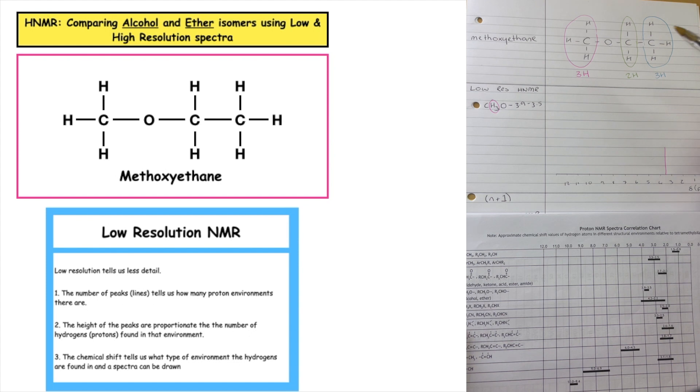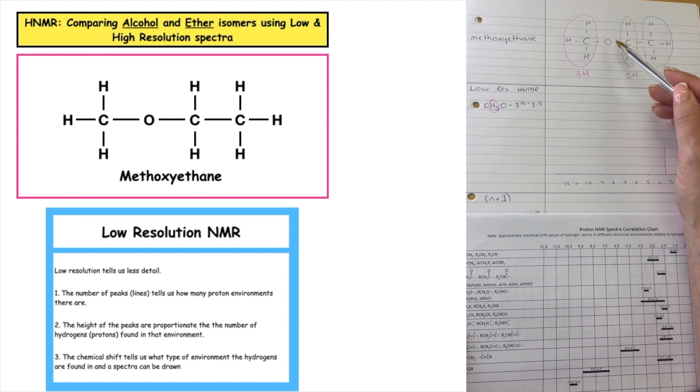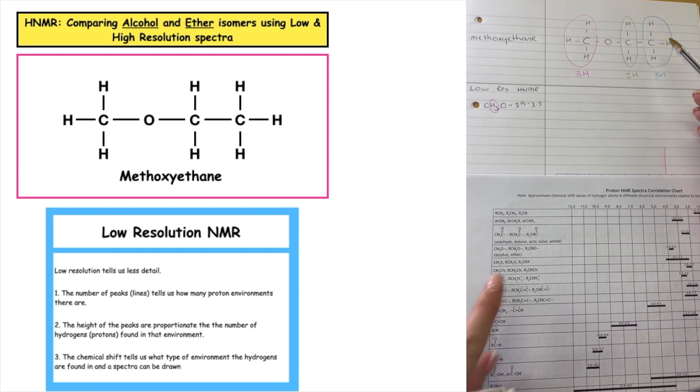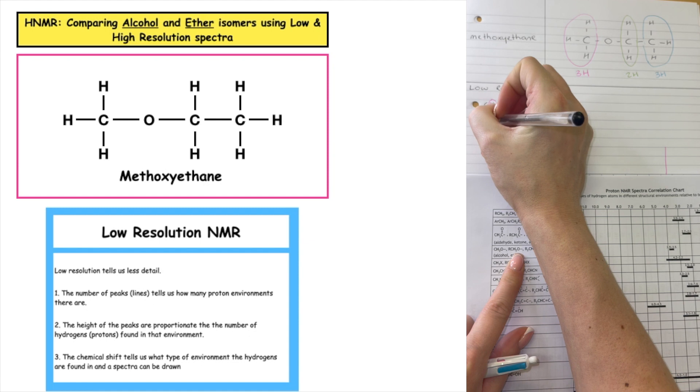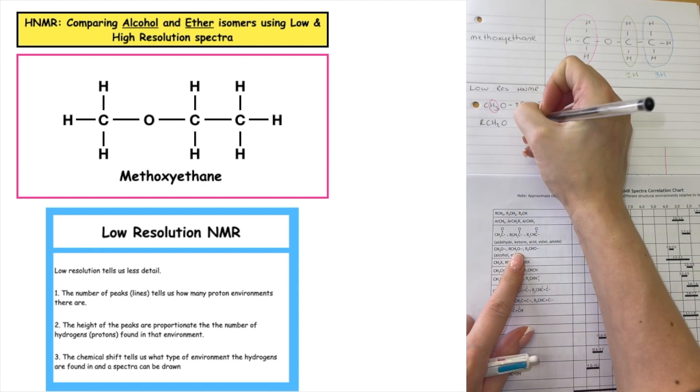The next one along is a CH2. Can we see that that's bonded to an O and it's bonded to an R? So we are going to be looking for an RCH2O. Can we see that we've got an RCH2O? And again, that's 3.9 to 3.5.